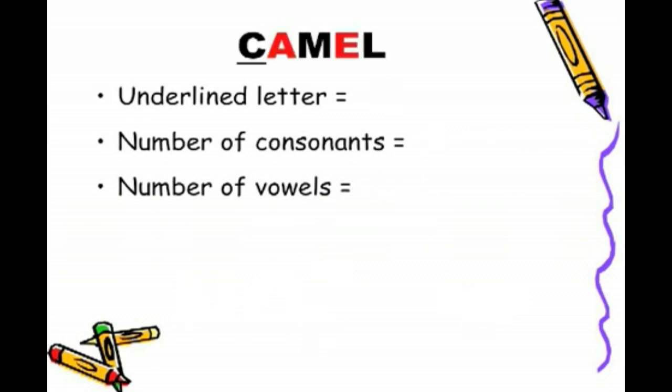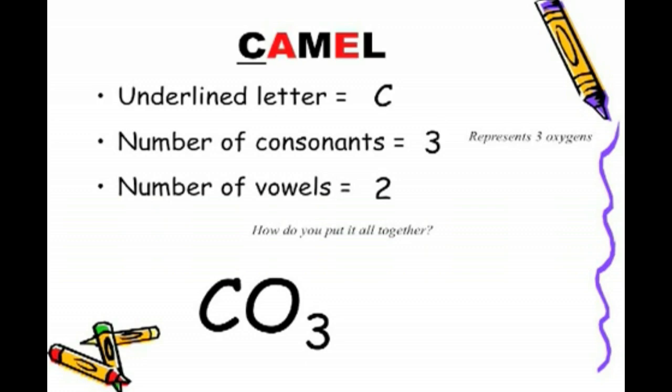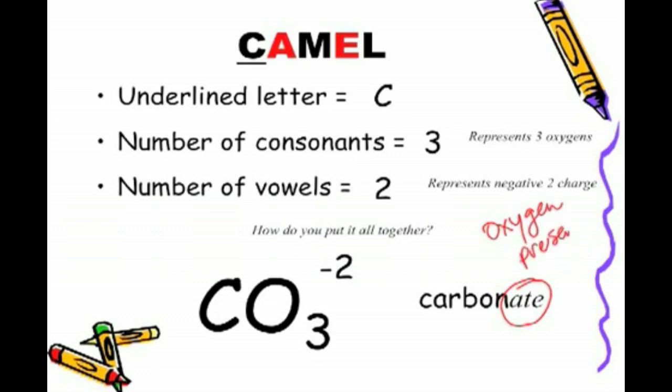Camel. The underlying letter is a C. Number of consonants, there are three. Number of vowels, there are two. So, how do we put it all together? We start off with the letter C. How many consonants? There are three consonants, so it represents three oxygens. So CO3, and how many vowels? There are two vowels, they represent two charges, two negative charges. So CO3, negative two. It's a derivative of carbon, but the ending has an ATE, so it's carbonate. We don't make reference to the oxygen. The ATE ending here tells us that oxygen is present with whatever is in front of it, carbon, or with nitrogen, as it was with the example before that.